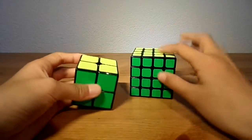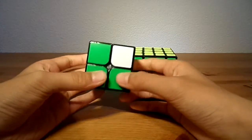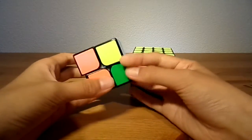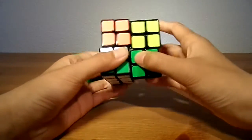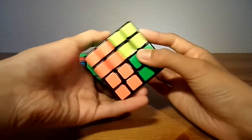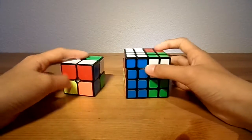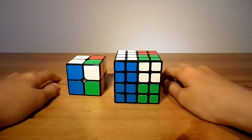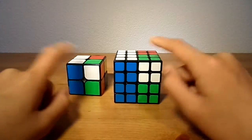It's a really easy scramble. You just put yellow on the top and green on the front, and you do R U R' U' and L2 U2. So R U R' U' L2 U2. There we go. It's the same scramble, right? Do you also have this on your 4x4 or 2x2, whatever you're using?